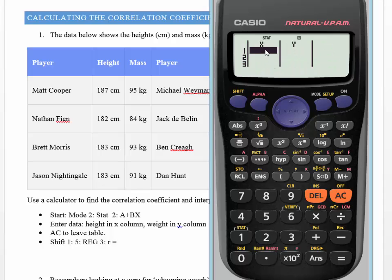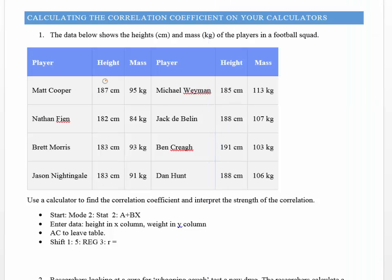And now you can see with number 2 I get an x column and a y column come up. And that relates to this table here where my height is my x column and my mass in this case is my y column.